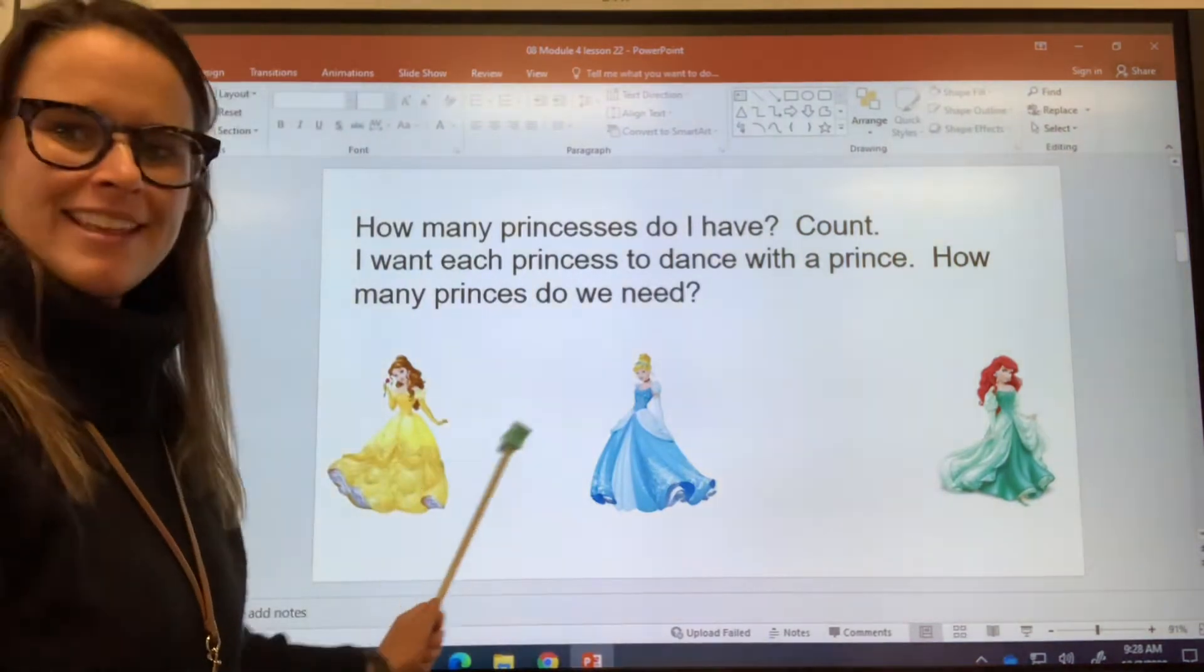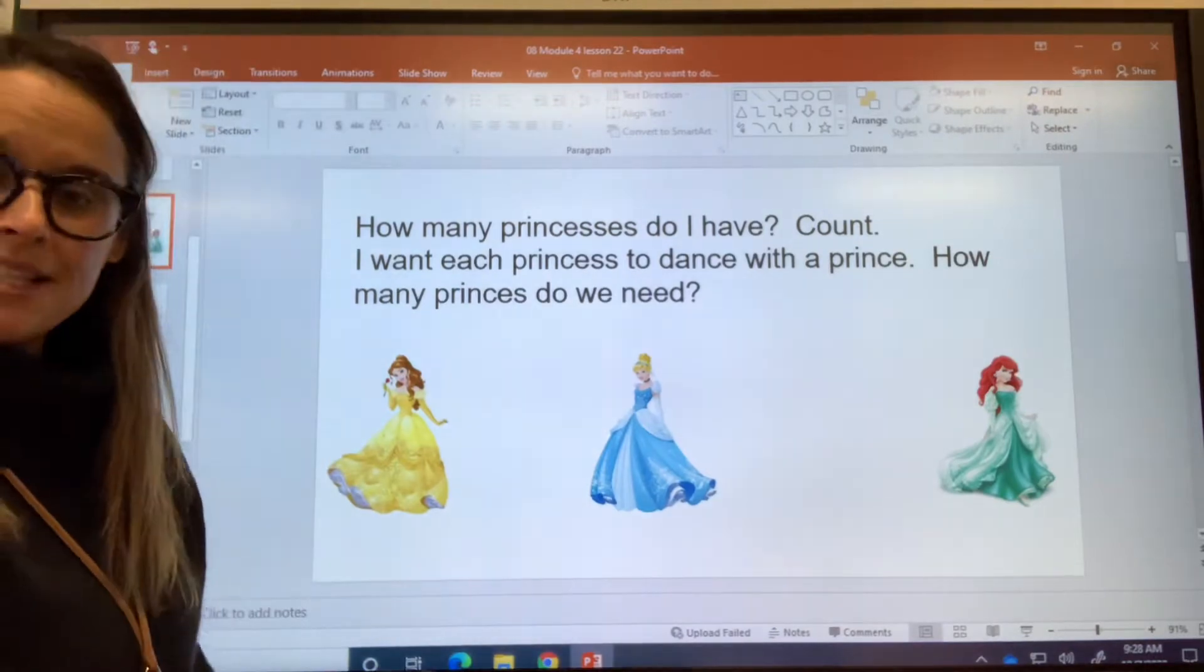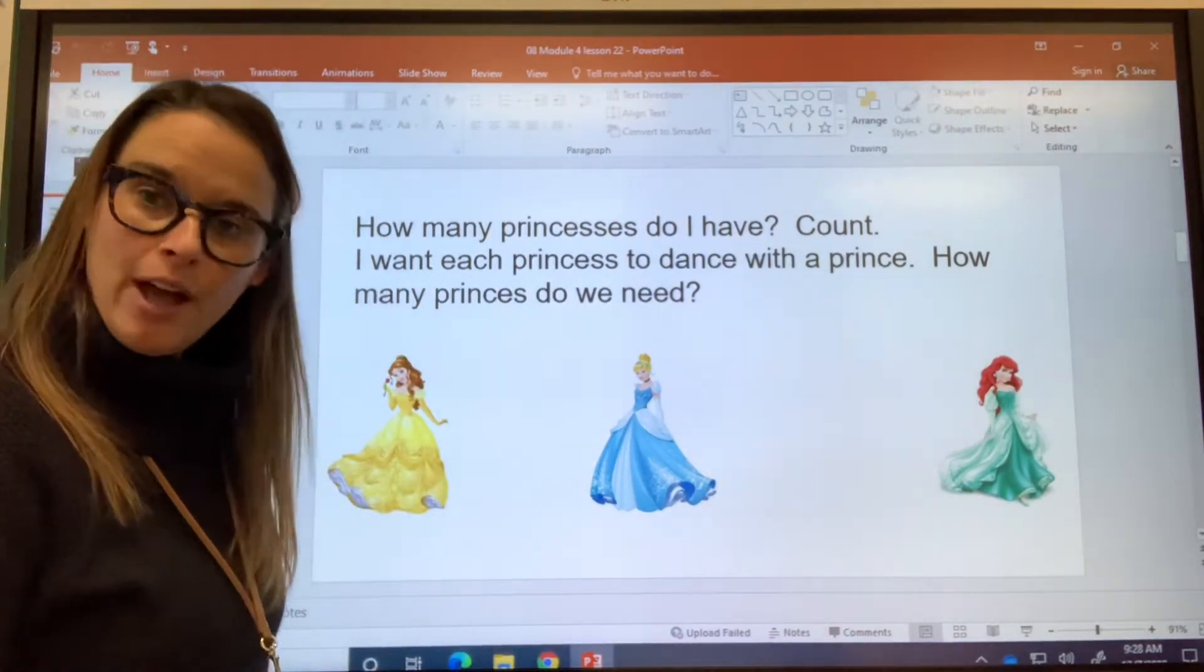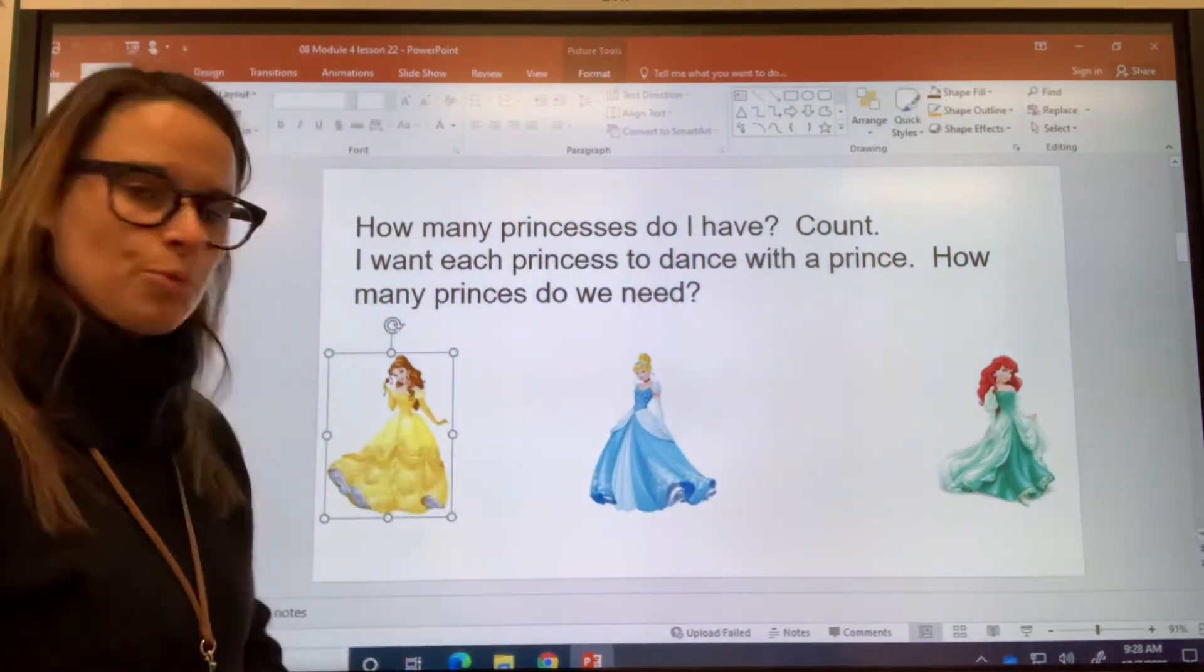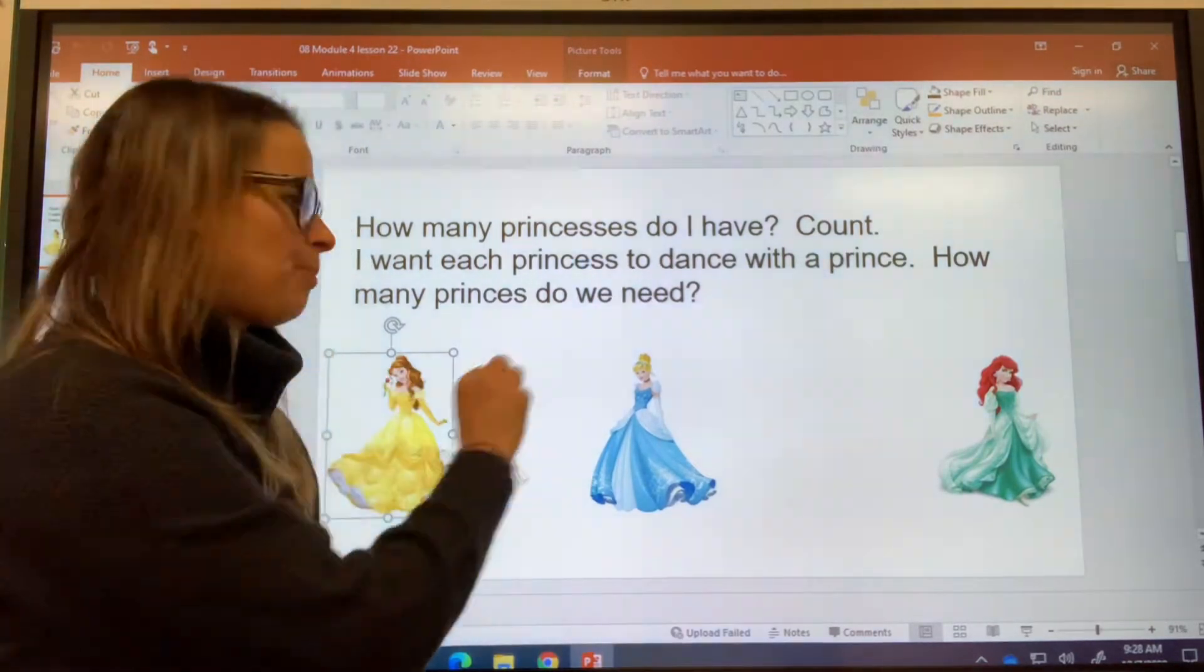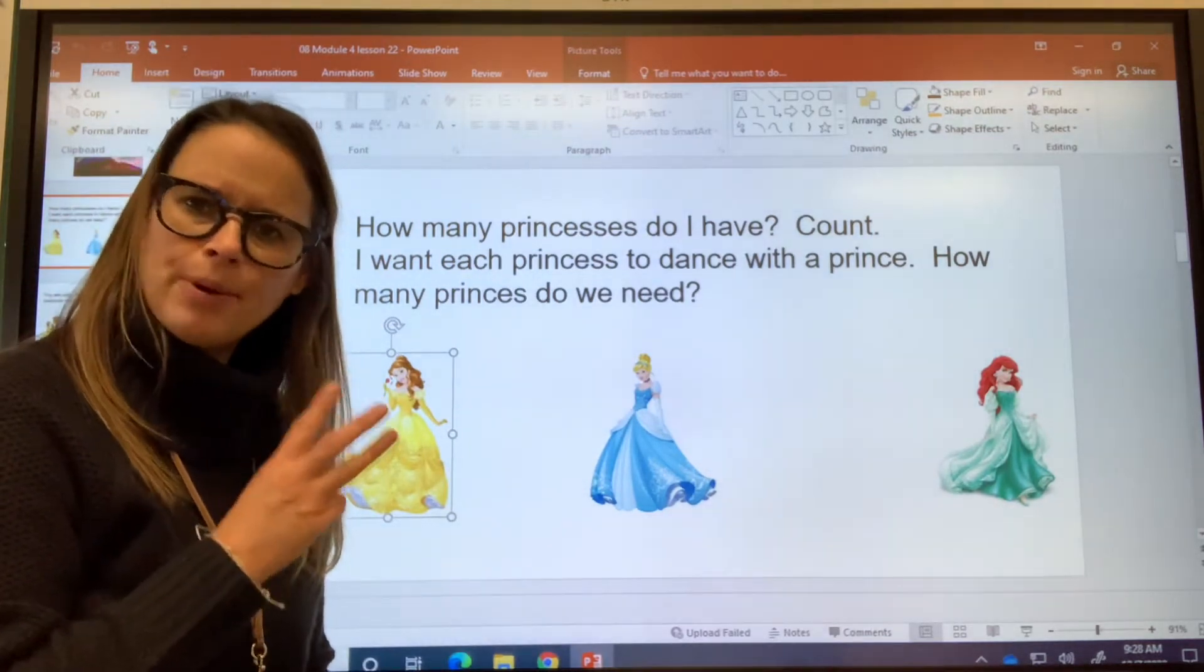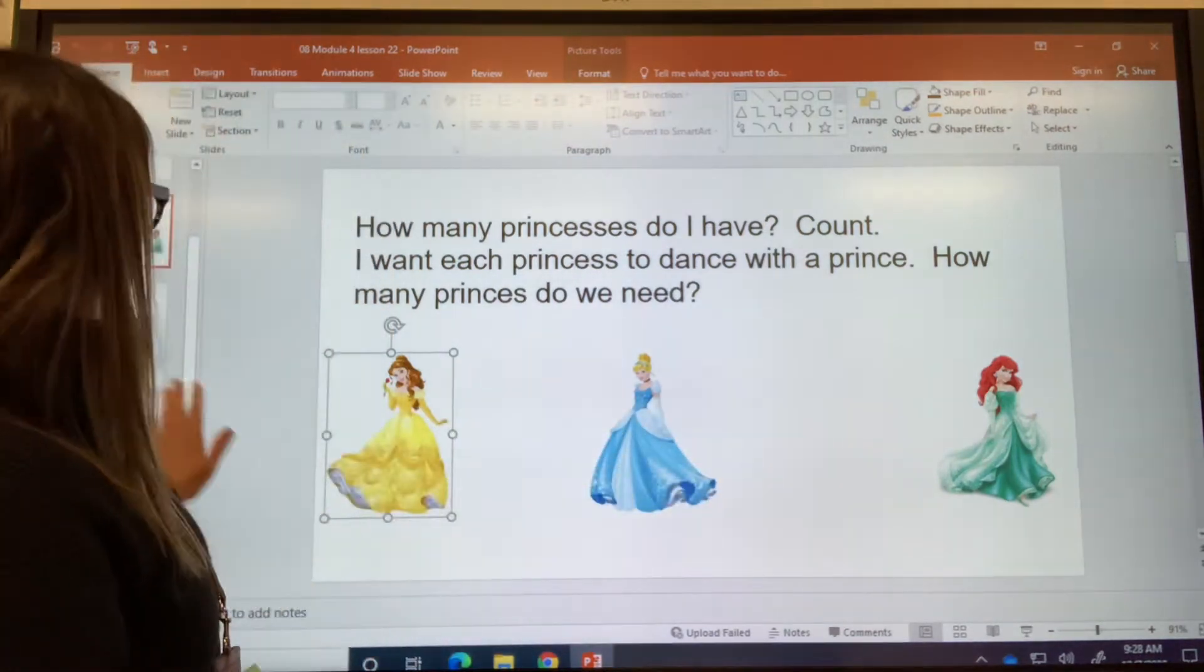Look at, I think some of you might like these. It says, how many princesses do I have? You ready to help me count the princesses? You can put your finger on the screen of your tablet if you're watching on your tablet or your computer and help me count. Ready? One, two, three. There's three princesses and I want each of them to be able to dance with a prince. So, how many princes do I need if I want each princess to have a prince to dance with? Three, right? Three princes. One for her, one for her, and one for her. We need three princes.